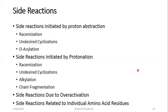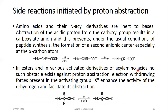Let us first start with the side reactions initiated by proton abstraction. Generally, amino acids and their N-acyl derivatives are inert to bases — the abstraction of the acidic proton occurs, and the carboxylate ion formed prevents the usual formation of another secondary carbanion at the alpha carbon. However, in esters and various activated derivatives of acyl amino acids, no such obstacle exists because electron-withdrawing forces in the carboxyl or activating group X enhance the acidity of the alpha hydrogen and facilitate its abstraction.